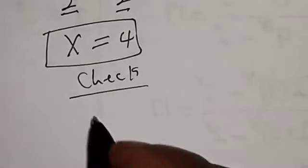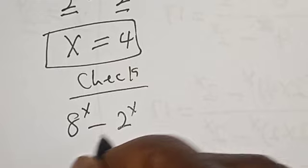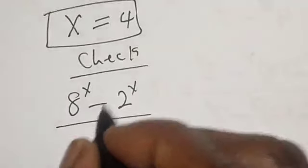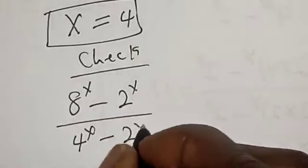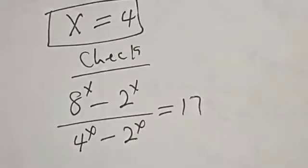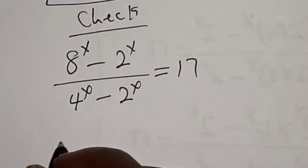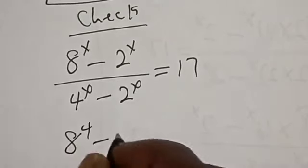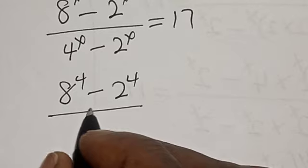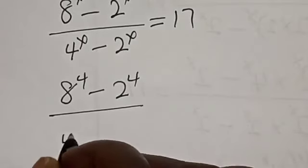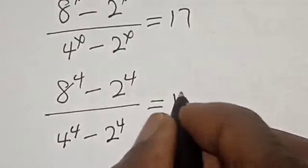We check using the original equation: 8 raised to power 4 minus 2 raised to power 4, divided by 4 raised to power 4 minus 2 raised to power 4, should equal 17. We compute: 4096 minus 16 divided by 256 minus 16.